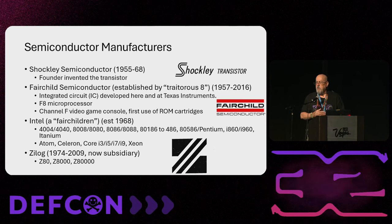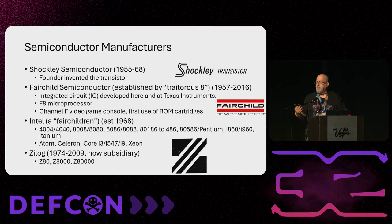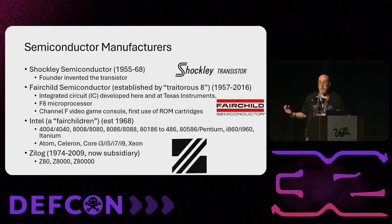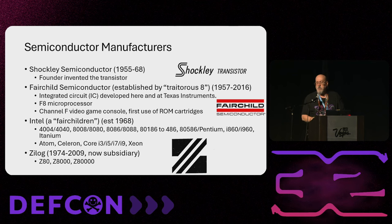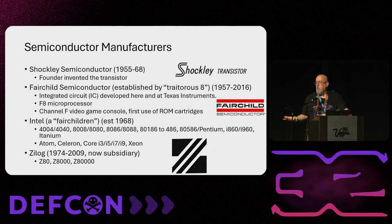Many of the people that came to Fairchild left to establish other companies, and sometimes left those to establish yet others — referred to as the Fairchildren. You can go online and see charts of all these second-generation companies that spread knowledge of semiconductors. Fairchild's big claim to fame is that they were one of two companies that created the integrated circuit that gives us all the computer chips we use today.